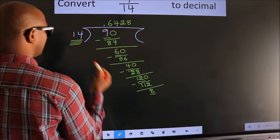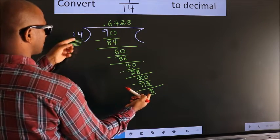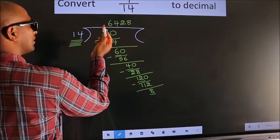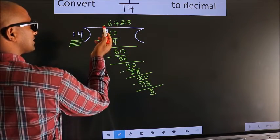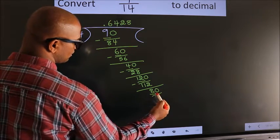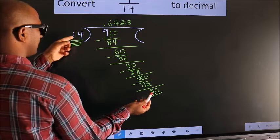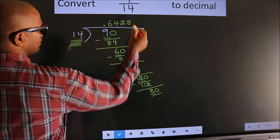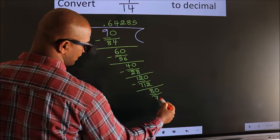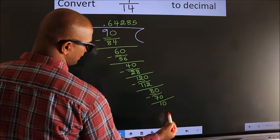Here we have 8 and here 14. 8 is smaller than 14, and we already have the decimal, so we can directly take 0. So we have 80. A number close to 80 in the 14 table is 14 × 5 = 70. Now we subtract. We get 10.